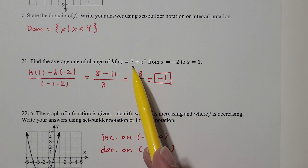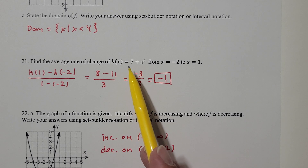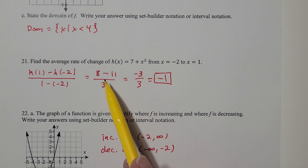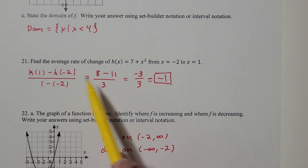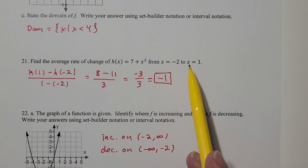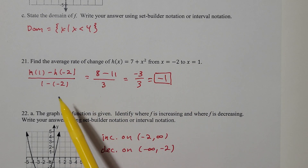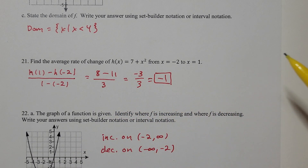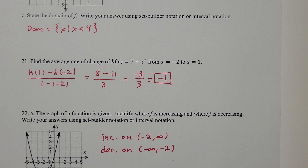Minus h(-2): when I plug in -2, I get 7 plus (-2)² which is 4, so 7 + 4 = 11. Up top that's 8 minus 11. Divided by 1 minus (-2), which is 3. 8 minus 11 is -3, so -3 divided by 3 gives me negative 1. So negative 1 is the answer.